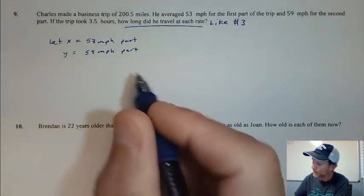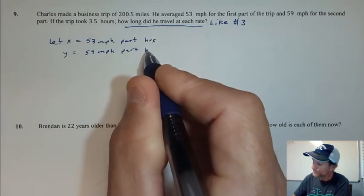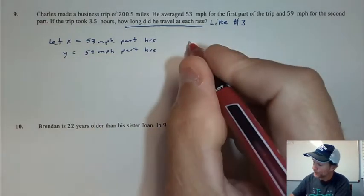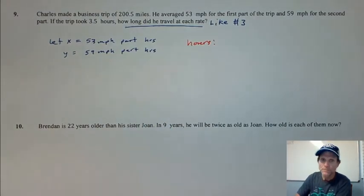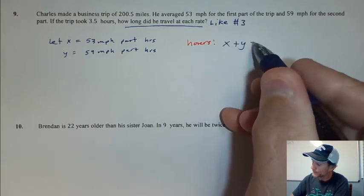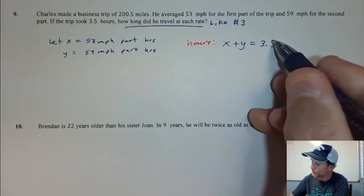And I'm going to let y equal the 59 mile per hour part. Remember that x and y are hours. I know that x plus y has to be the total time of the trip, and the total time of the trip is 3.5 hours.